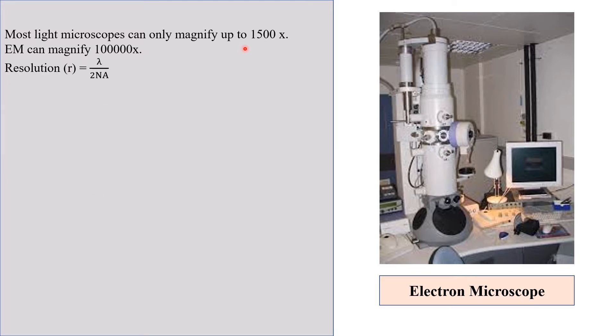And resolution, that is R, is equal to lambda by 2NA, where lambda is the wavelength of light and NA is numerical aperture. Now we have learned higher the resolution, clearer the image. Resolution depends on two things: wavelength of light and numerical aperture.